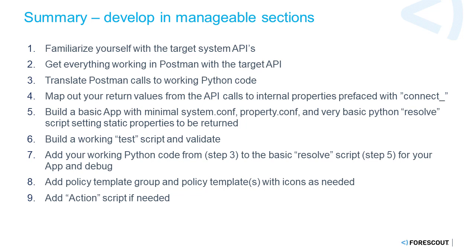Then translate your Postman calls into working Python code. Remember, you can't use the requests library here — we do have a feature request in to get that added, but in the meantime you're going to have to use urllib. So just keep that in mind and build them in that fashion. Then you need to map out your return values that you're going to get from the API calls and map those to the internal CounterACT properties, and prefix those with the word 'connect' so you know what you've got.